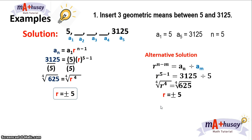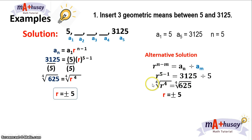Again, why is it positive or negative 5? Because the index of this radical is even. So in this case, we have two sets of geometric means.